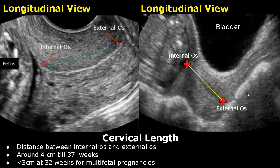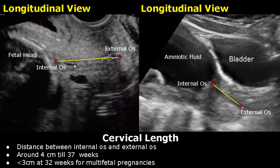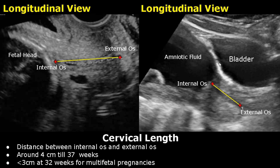Here are more images showing measurement of cervical length. On the left side is a transvaginal approach with calipers placed for measurement of cervical length, and on the right side is a transabdominal approach. This is the bladder, and this is amniotic fluid.